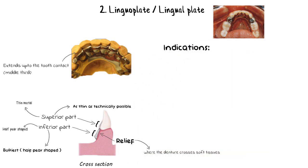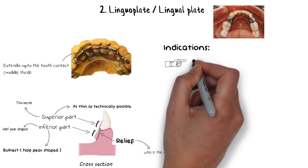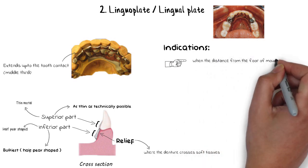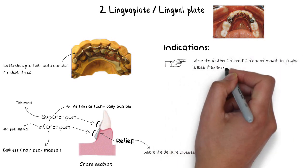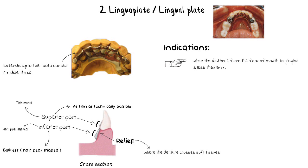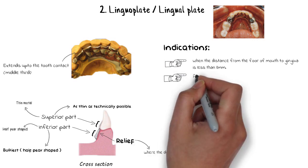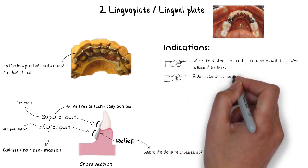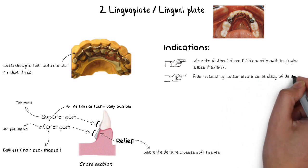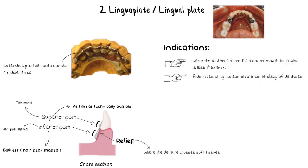The major indication for the lingual plate is when the floor of the mouth or the lingual frenum is too high and the space available for the lingual bar is less than 8 mm. A lingual plate, when designed accurately, can also help resist horizontal rotation tendencies of a denture by providing support to remaining natural teeth, especially in Class I situations where residual ridges have undergone excessive resorption.